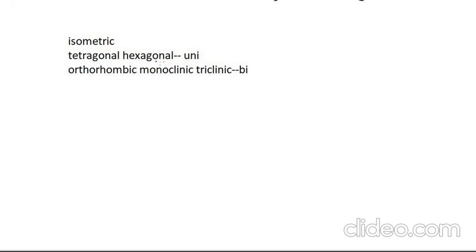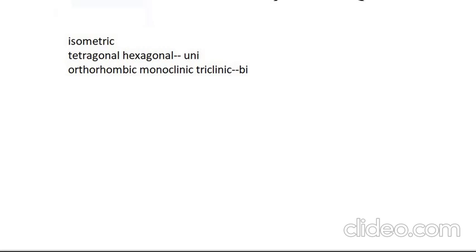Regarding uniaxial minerals — there are six crystal systems: isometric, tetragonal, hexagonal, orthorhombic, monoclinic, and triclinic. Tetragonal and hexagonal systems belong to the uniaxial minerals, while orthorhombic, monoclinic, and triclinic belong to biaxial minerals. In uniaxial minerals, light entering the crystal splits into two defined directions because uniaxial minerals have two defined refractive indices, called omega and epsilon.